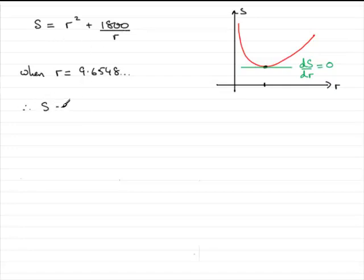And so therefore we have S equals 9.6548 and so on squared plus 1,800 all divided by 9.6548.